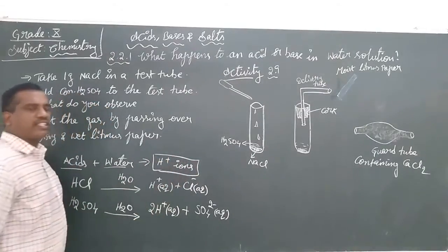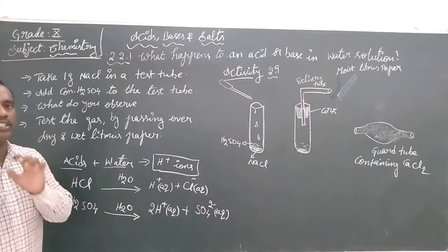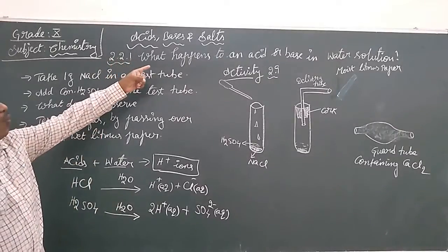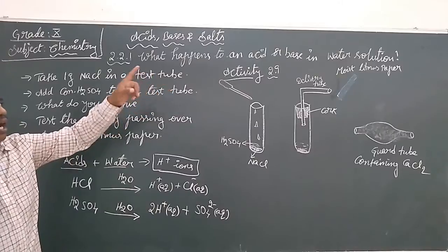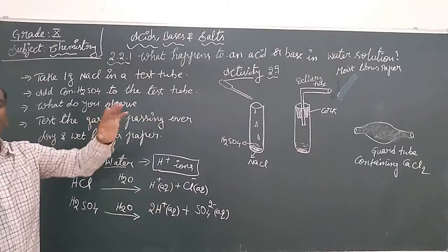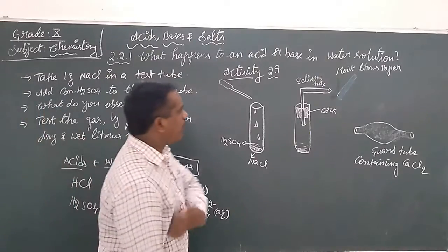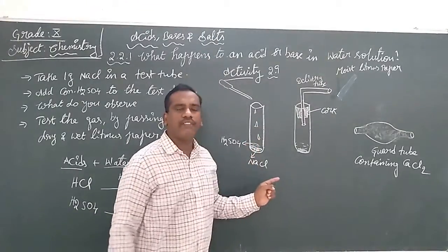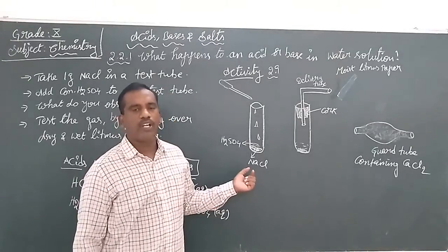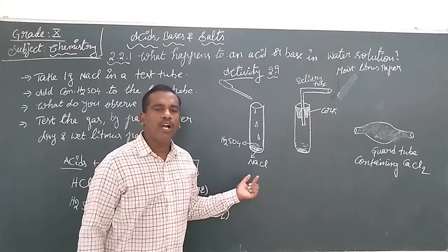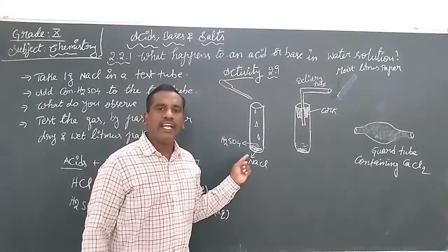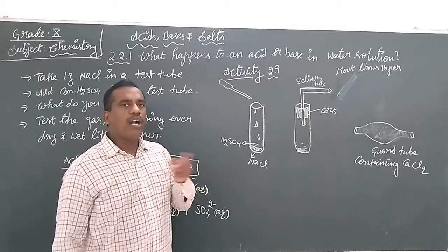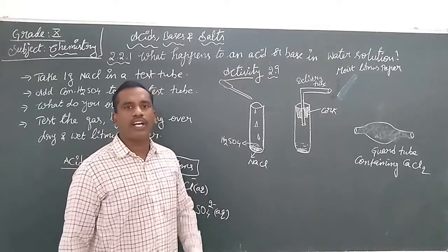We want to prove that H⁺ ions are produced when acid is dissolved in water. The question addressed is: what happens to an acid or base in a water solution? For this, we are going to take a test tube with a small amount of sodium chloride, and to that we have added H₂SO₄, sulfuric acid. Let us see what the reaction between sodium chloride and sulfuric acid will be.